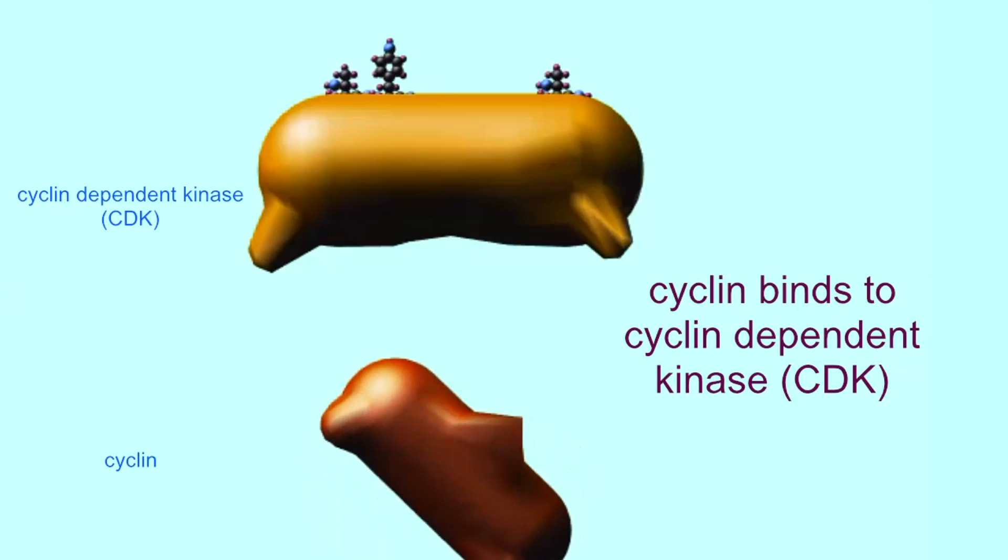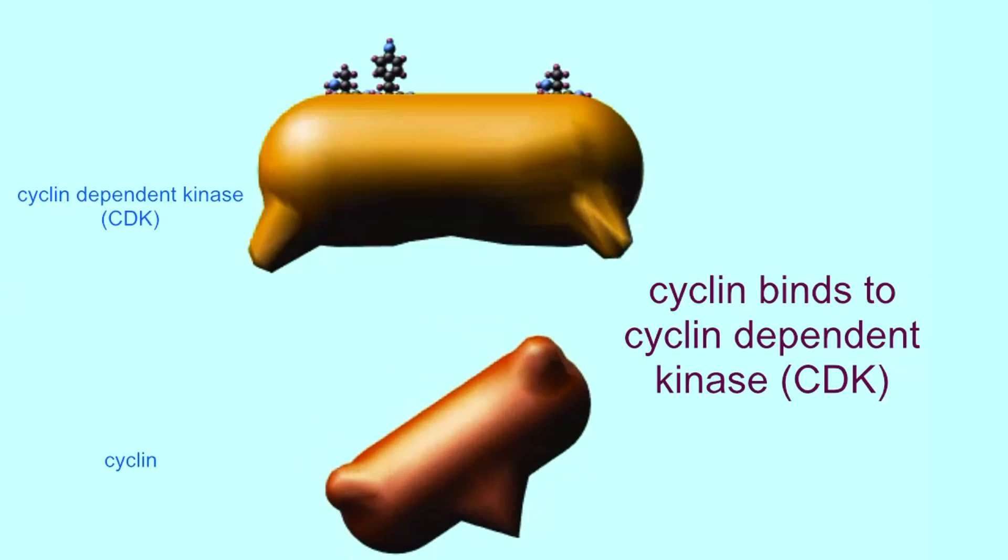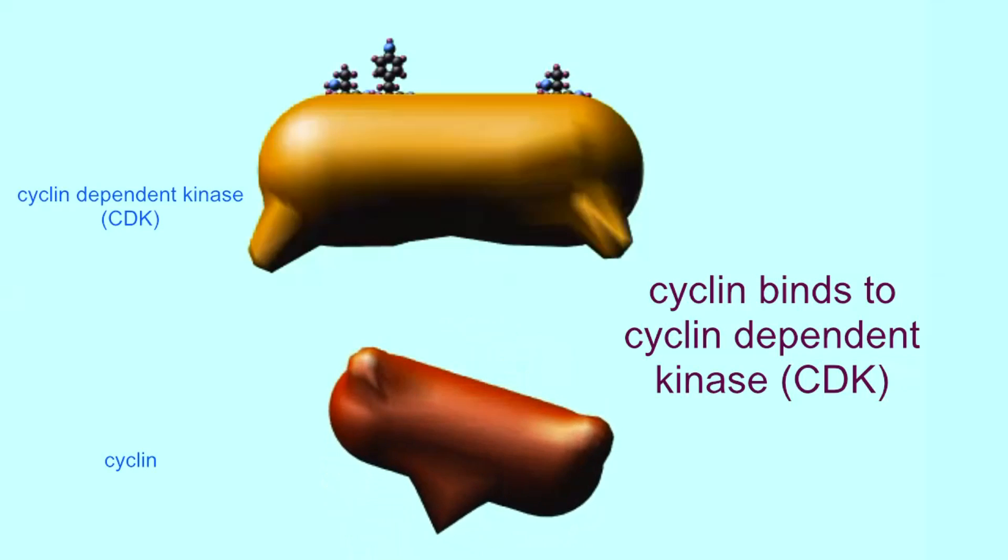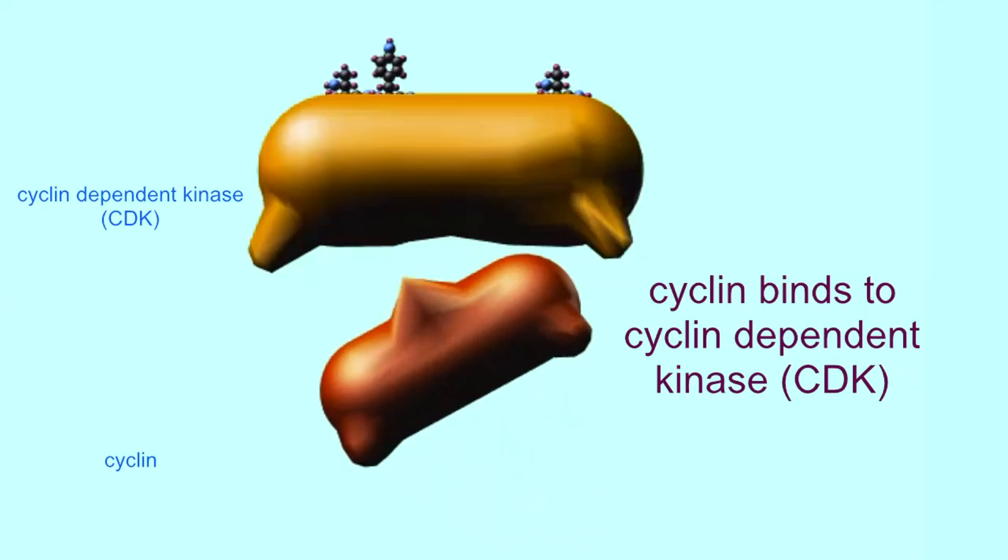Cyclin activity is mediated through a set of cyclin-dependent kinases, or CDK enzymes, which are in turn regulated by their phosphorylation.